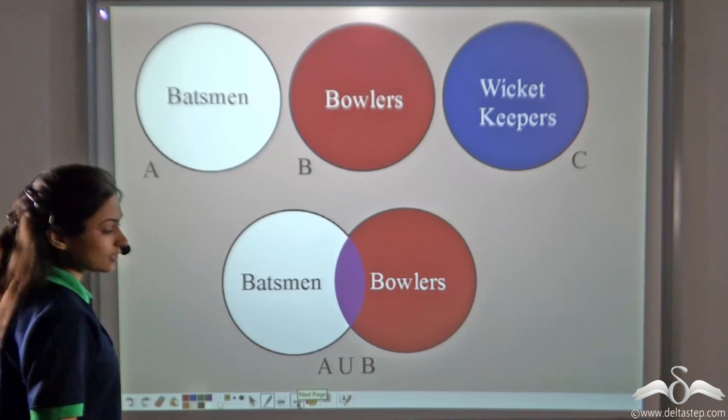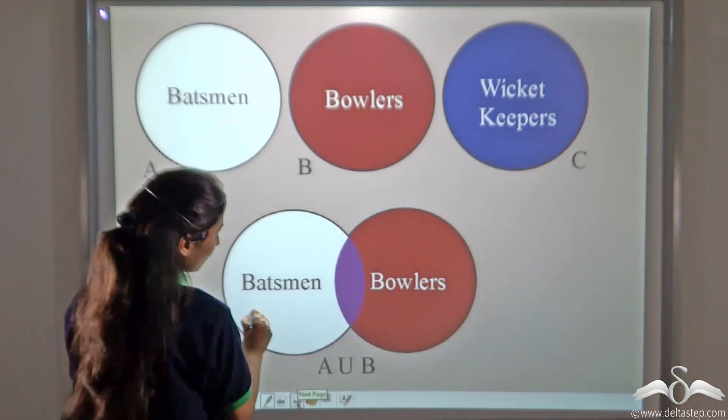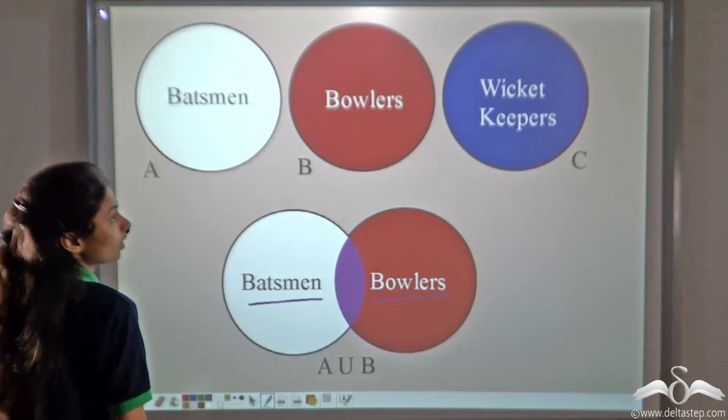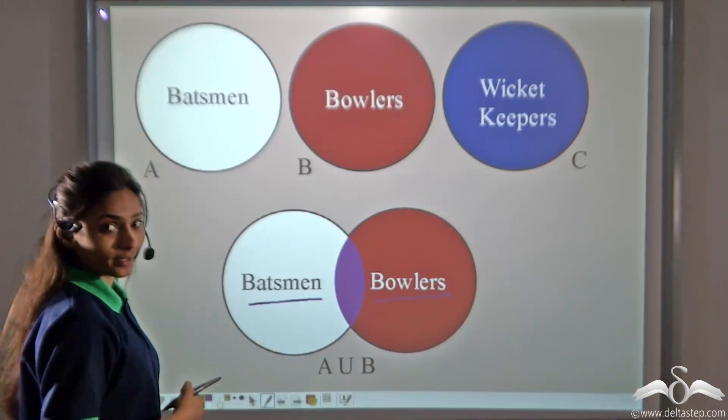It will look like this. You will have a team with batsmen as well as bowlers. Now, is your team complete here? No.